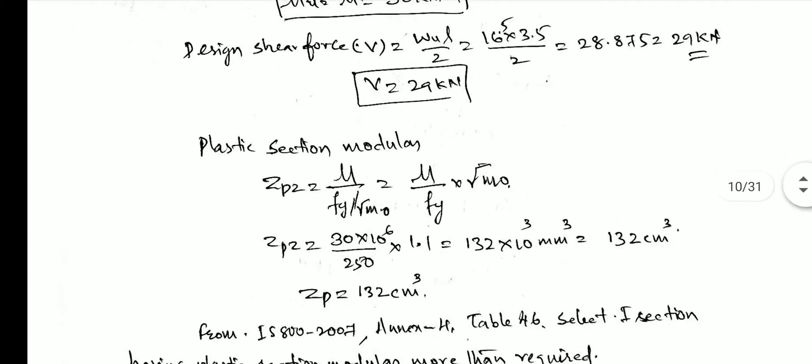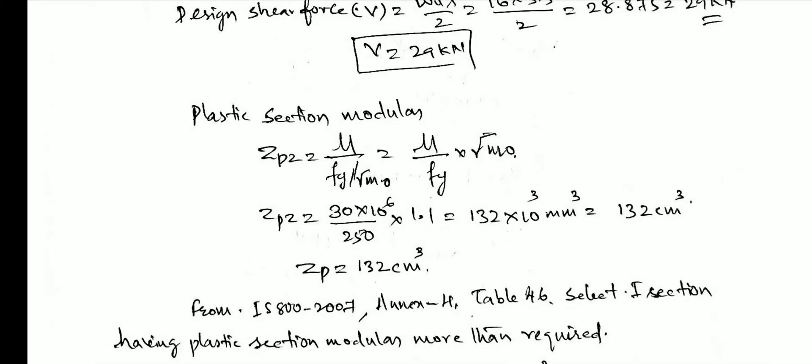Next, we calculate the required plastic section modulus Zpz = Mu / (fy × γm0). Here Mu is the design moment (not working moment). Converting Mu to N·mm: 30 × 10⁶ N·mm. After applying the formula from IS 800 page 30, we get Zpz = 132 × 10³ mm³. Converting to cm³ gives Zpz = 132 cm³, because Annexure H Table 46 in IS 800 lists Zpz values in cm³.